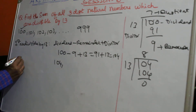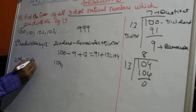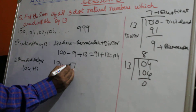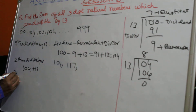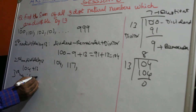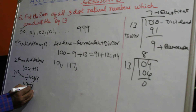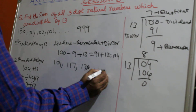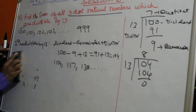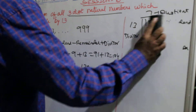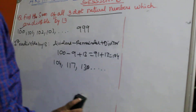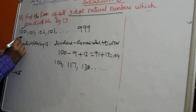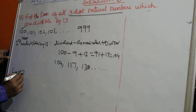The second number divisible by 30 is nothing but 120 plus 30, which gives 150. And 150 plus 30 is 180, and so on. To find the last number divisible by 30, you take the last three-digit number, which is 999.